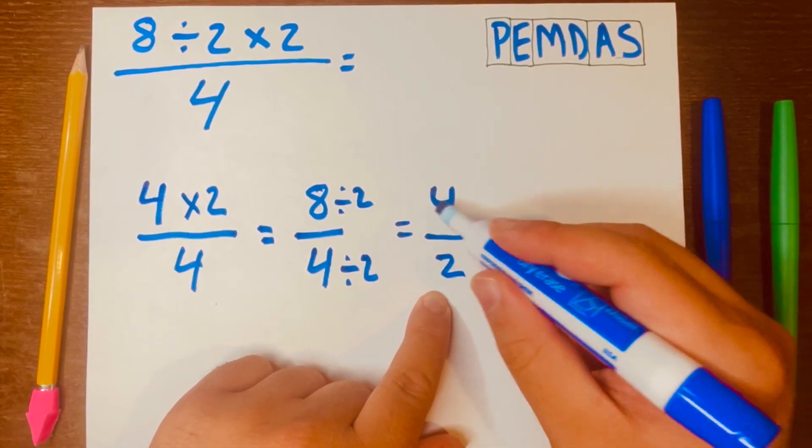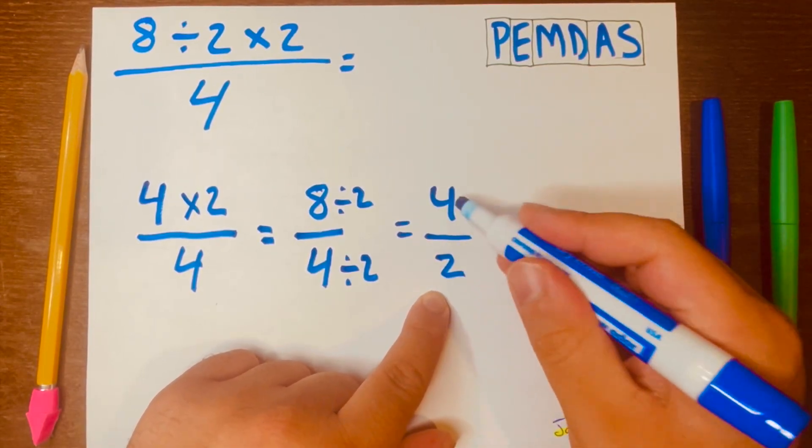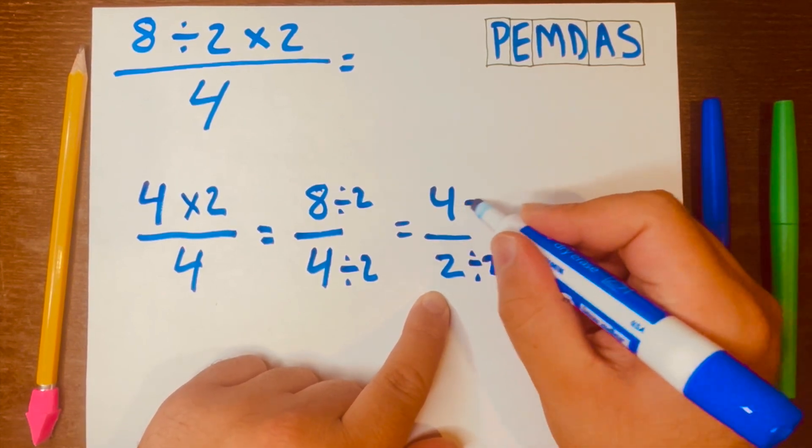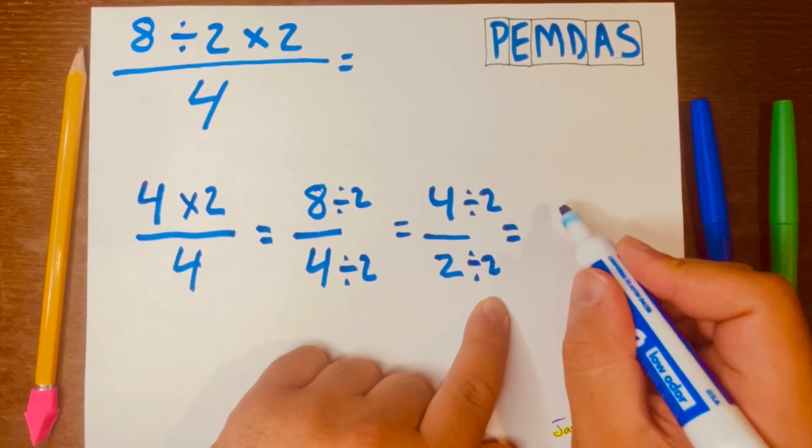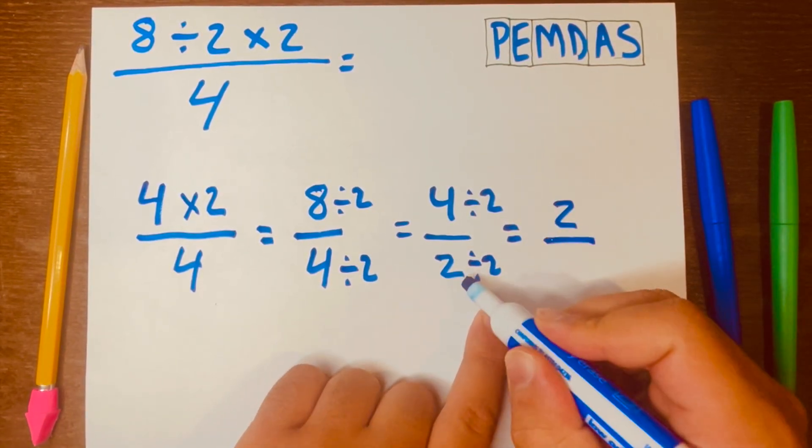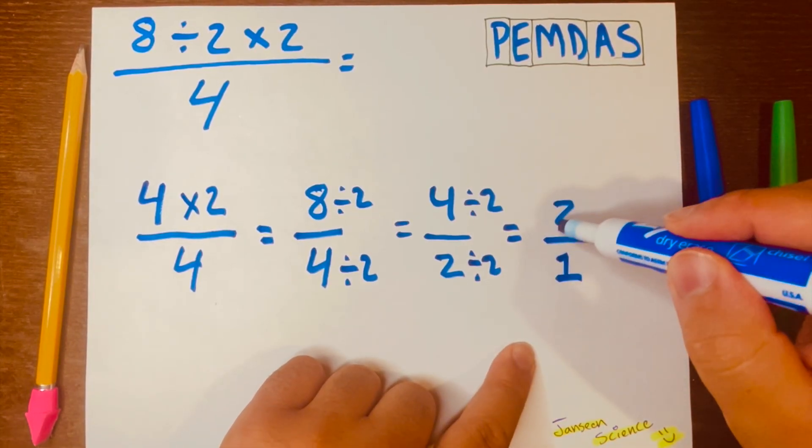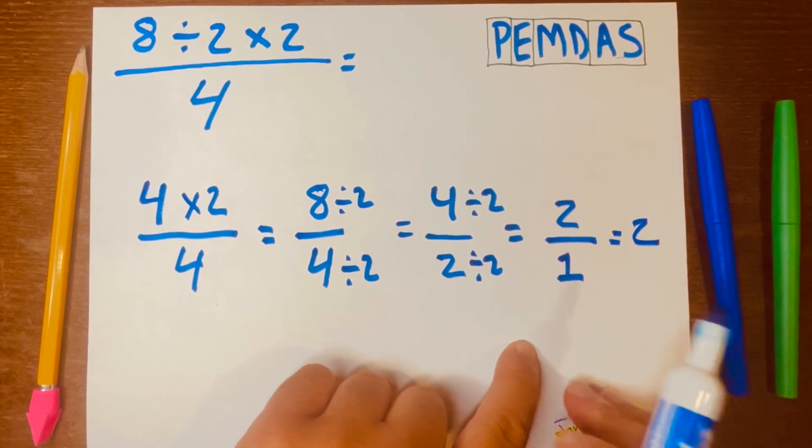And again, we can't leave this. We can still break this 4 over 2 to its simplest terms. And both numbers are even, so we just divide by 2 on both sides. So, 4 divided by 2 is 2, and 2 divided by 2 is 1. So, your answer is 2 over 1, or 2. So, your answer is 2.